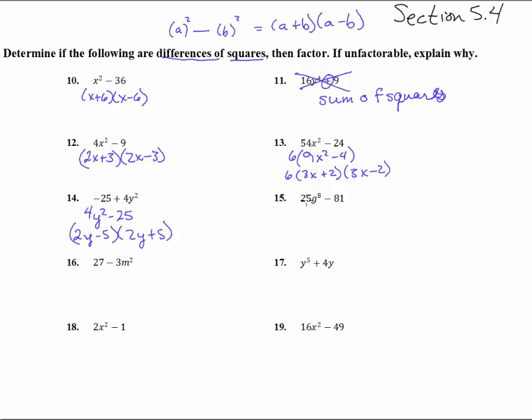And you can multiply it back out to see those middle terms cancel. What do we got here? Anything common? No, but we do have a difference. 25g to the 8th. So this is 5 squared. That's 9 squared. g to the 8th. What times itself would be g to the 8th? g to the 4th. So this is 5g to the 4th plus a 9, 5g to the 4th minus a 9.